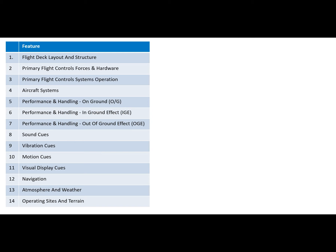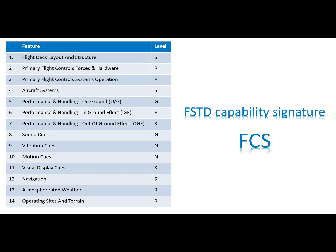The new framework is based on 14 features that are all independent from each other. Each feature is graded into one of four levels. You can see an example on this column. The features and levels together are known as the FSTD Capability Signature, FCS — it is the heart of the whole framework. The FSTD qualification certificates will show this kind of FCS table, and the training requirements will require a certain FCS for any training task to be performed in an FSTD.